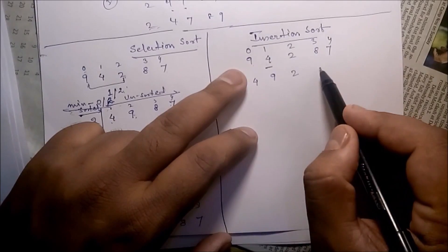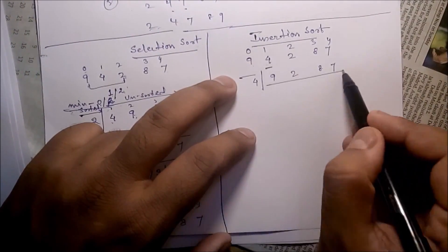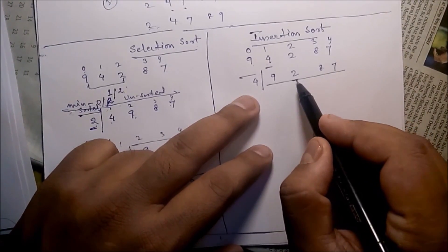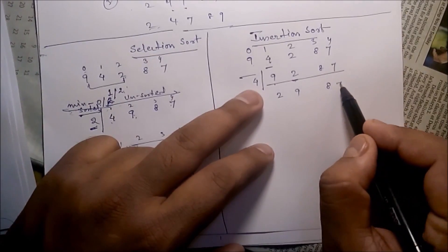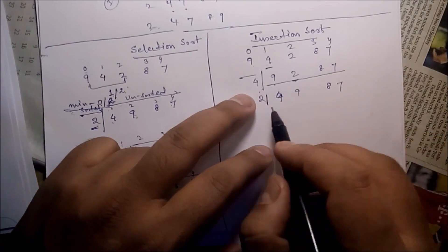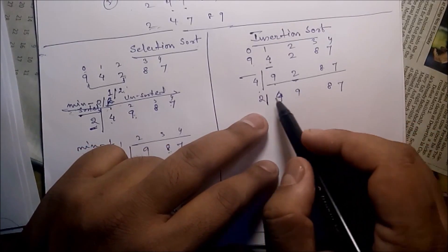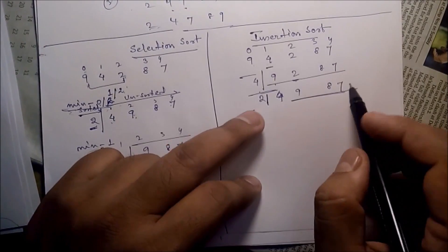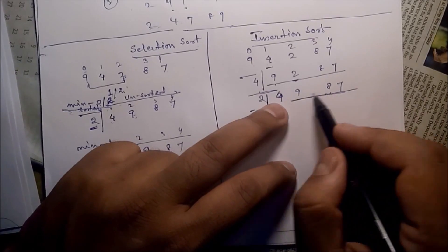2, 8, 7 — the left part is the sorted part, the right part is the unsorted part. Next, starting with 2: compare 2 with 9, swap, then 2 with 4, swap. So this particular part is the sorted part and this part is the unsorted part. Then compare 8 with 9, 8 with 4 — 8 is in between 4 and 9.